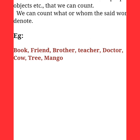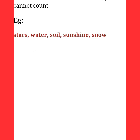Countable nouns are names of people or objects that we can count — like book, friend, brother, teacher, doctor, pencil, box, and razor. These are all countable nouns.